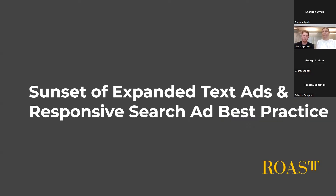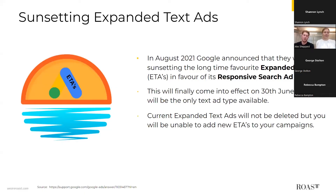Back in August last year, Google announced the sunsetting of the expanded text ad format in favour of making responsive search ads the sole available ad format. This comes into effect on June 30th — from then on you will no longer be able to create or edit any existing ETAs within your Google account. However, they won't go away fully; they will still continue to serve alongside your RSAs with the option to pause and reactivate, and you will still have visibility on their performance. Call ads and dynamic search ads will not be affected.